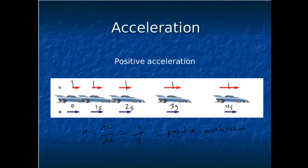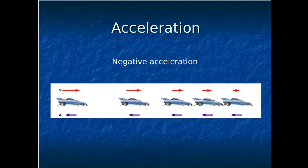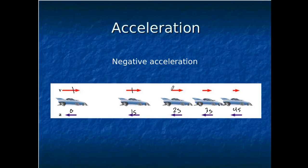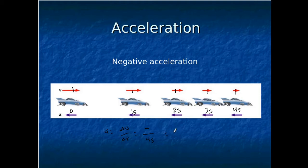In the next example, we have the opposite. At time zero, one second, two seconds, three seconds, and four seconds, you can see that in the first second it travels a large distance, then a smaller distance, then a smaller distance again, and then a smaller distance again. That indicates the speed is decreasing. So acceleration equals the change in velocity divided by the time — and since the change in velocity is negative divided by four seconds, you have a negative acceleration.